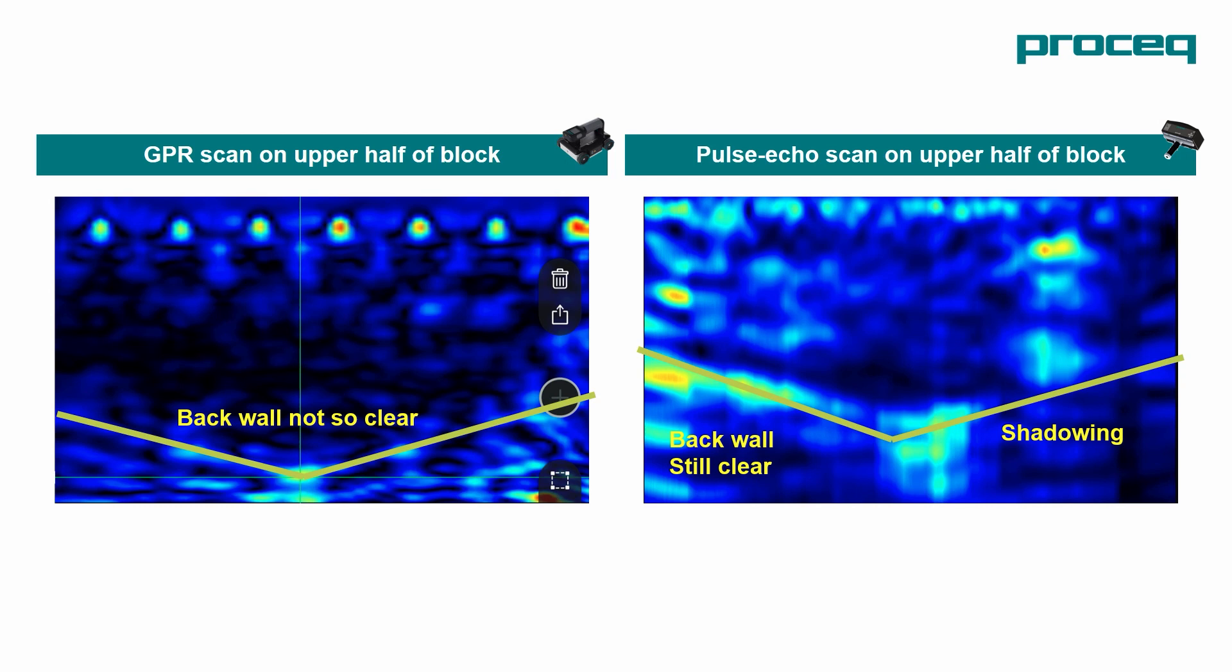The GPR's mapped out the rebars very clearly. They're not so visible with the pulse echo, but the pulse echo has detected honeycombing beyond the rebar layer.